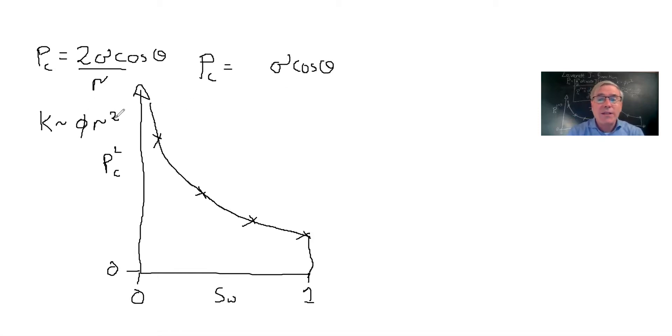The key insight here is to introduce a dimensionless function. We see that capillary pressure is a function of saturation. We see that locally the capillary pressure is proportional to σcosθ. So we can write PC as σcosθ divided by some typical radius. What's a typical radius in terms of permeability? We can write here that a typical radius scales as √(k/φ).